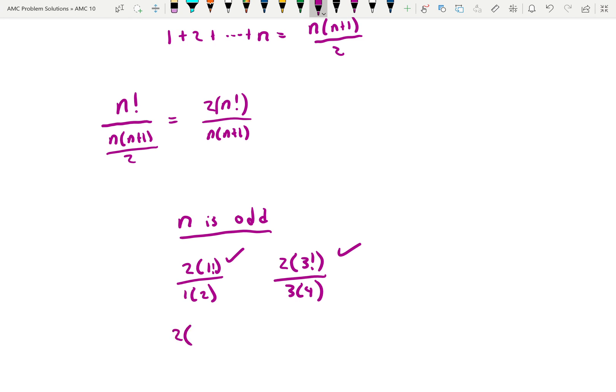And looking at other cases, 2 times 5 factorial over 5 times 6. We see that 5 is a factor of 5 factorial. And then we're left with just 4 factorial. And 4 factorial is divisible by 6. So this would work. And since that works there, it's going to keep working.